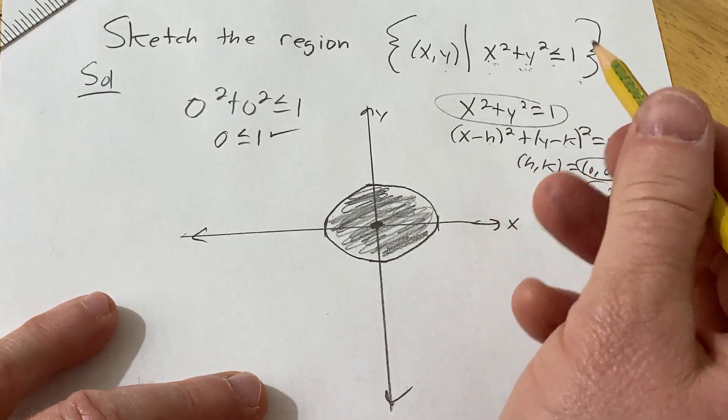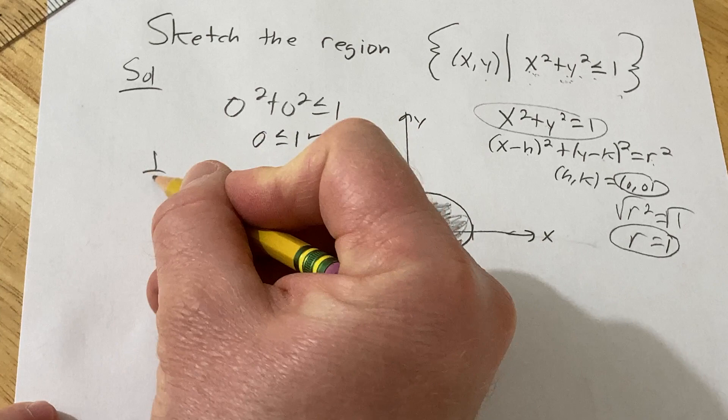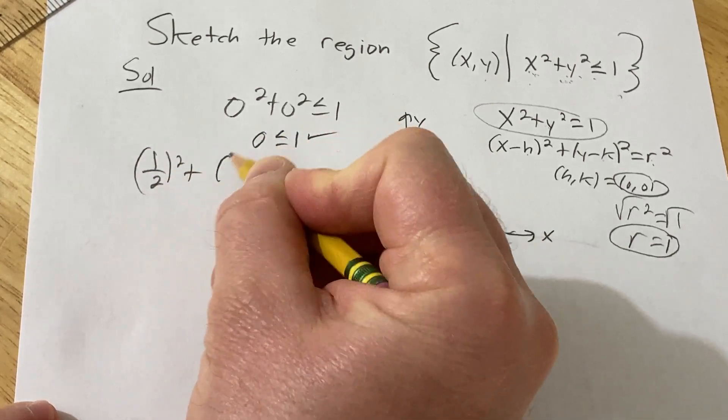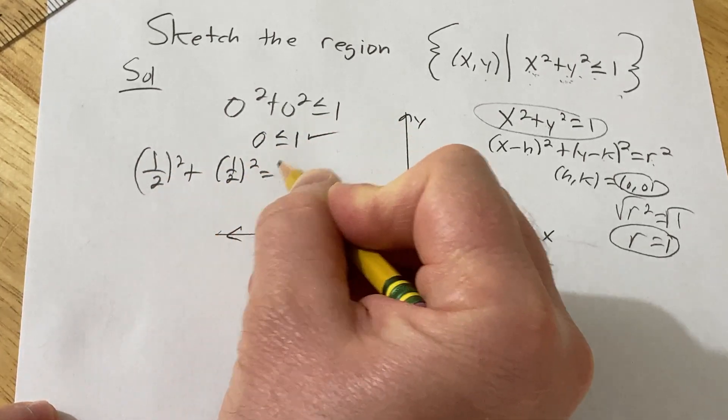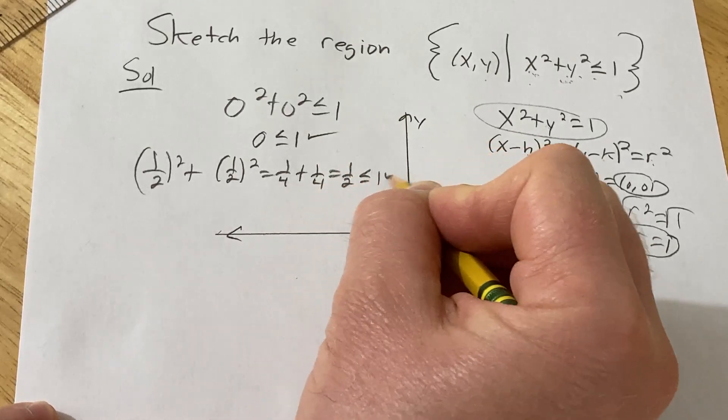Likewise, the point (1/2, 1/2) is there. If you plug in 1/2 and 1/2, you get (1/2) squared plus (1/2) squared. That's 1/4 plus 1/4, which is 2/4, which is 1/2, which is less than or equal to 1. So the point (1/2, 1/2) is also there.